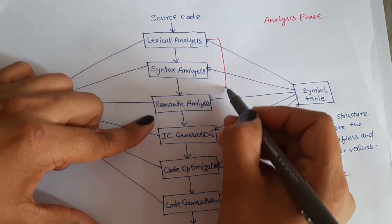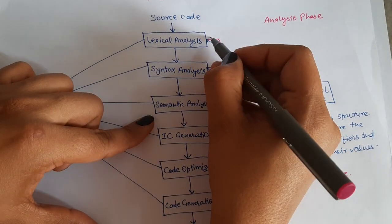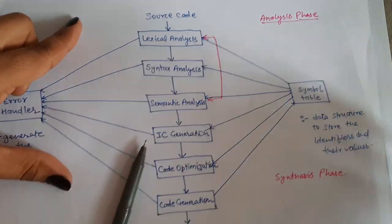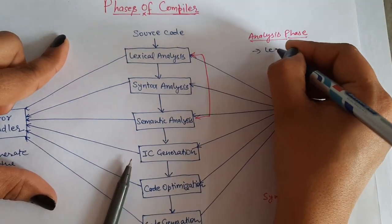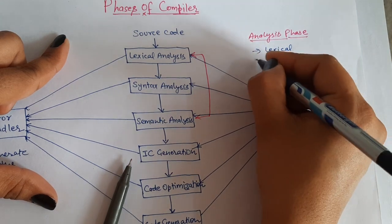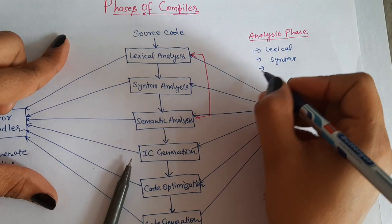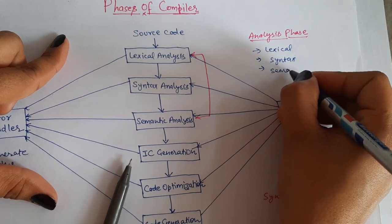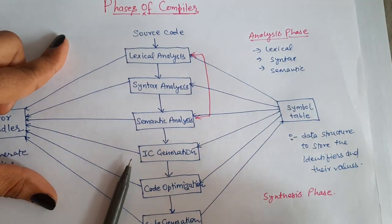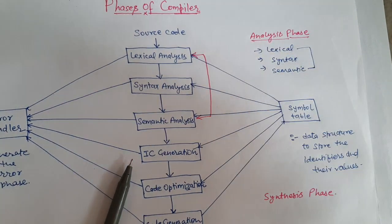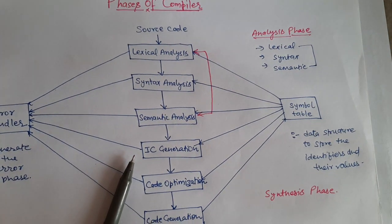Lexical analysis, syntax analysis and semantic analysis, these three phases make the analysis phase. Analysis phase is more dependent on your source code and less dependent on your machine, because it is converting your source code to intermediate code.